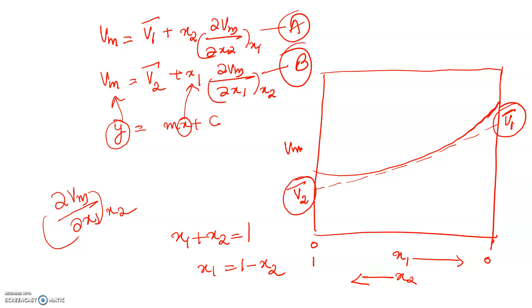This is the determination of partial molar volume by the method of intercepts, mainly for a two-component system. For a multi-component system, the equation is a little different.